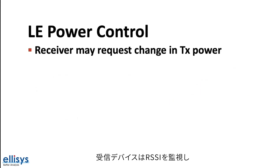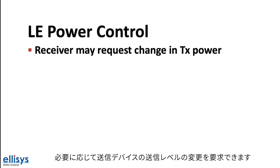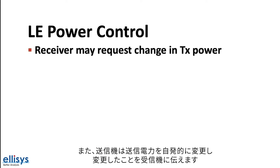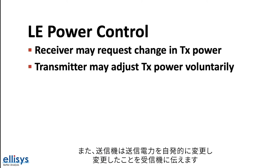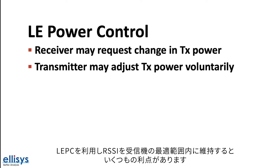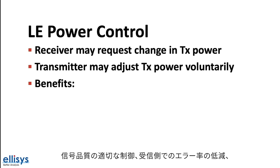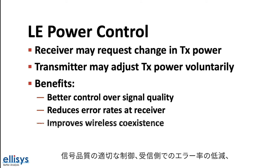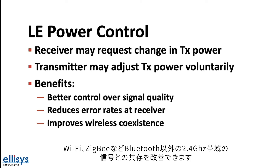With the new LE power control feature, a receiving device monitoring the RSSI from a connected device may request a change in the transmit power level used by its peer in either direction. A transmitter may also change the transmit power voluntarily and relay that information to the receiver. Utilizing LE power control and keeping the RSSI within the optimal range provides benefits including better control over signal quality, reducing error rates at the receiving end, and improving coexistence with other signals in the 2.4GHz band, including Wi-Fi and ZigBee.